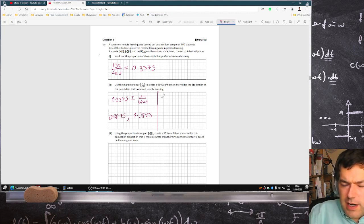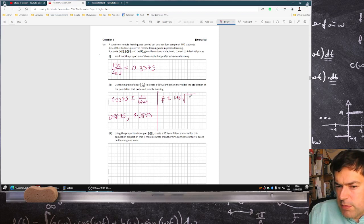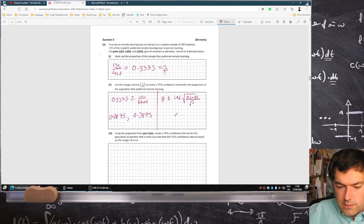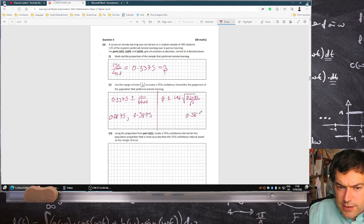There's a slightly more accurate formula where it's the proportion plus or minus 1.96 times root of the proportion times 1 minus the proportion over n. So I'm just curious to see how similar or different that formula would be if I used it. 0.3375 plus 1.96 root 0.3375 times 1 minus 0.3375 over 400. Pretty close. 0.3838, nearly the same.